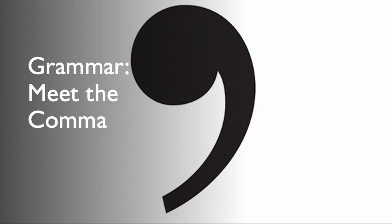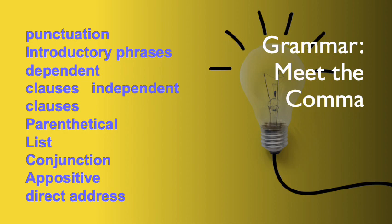Students either use the comma in the wrong place or don't use it at all. Knowing where to use the comma is essential in English because sometimes the incorrect use of it can change the whole meaning of the sentence. Key terms that will come up include punctuation mark, introductory phrases, dependent and independent clauses, parenthetical, list, conjunctions, appositives, and direct address.